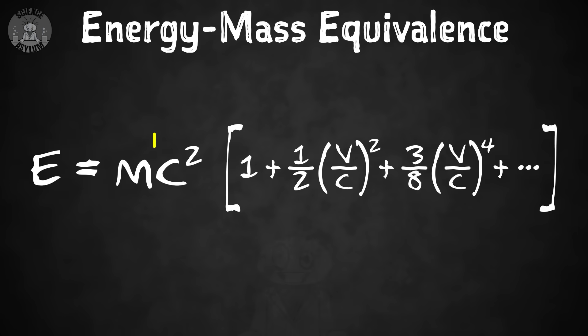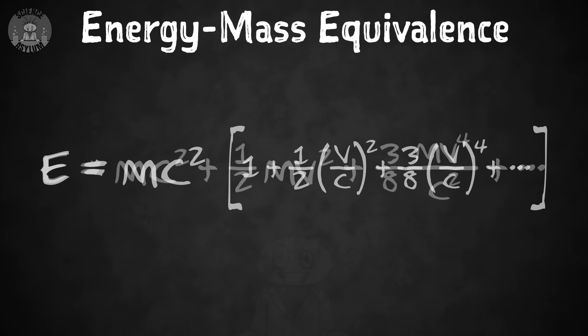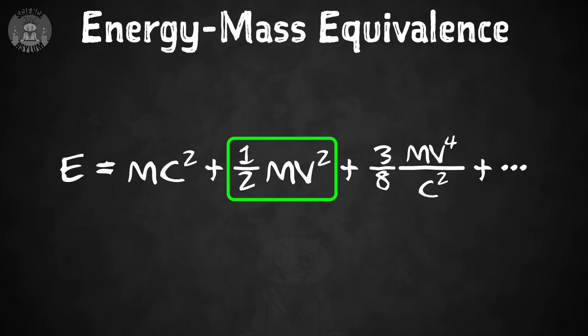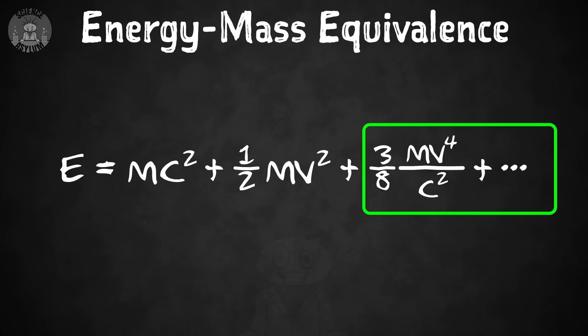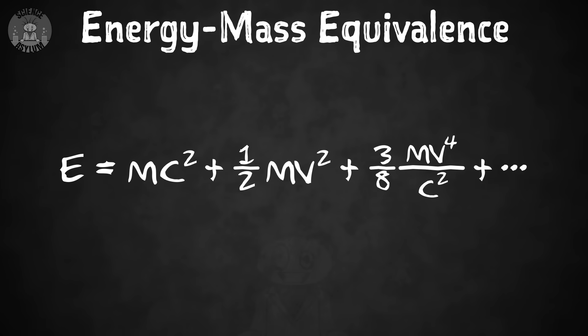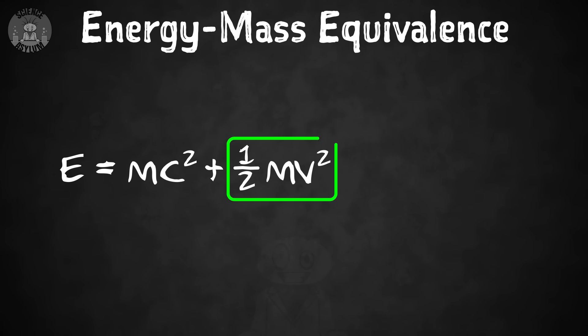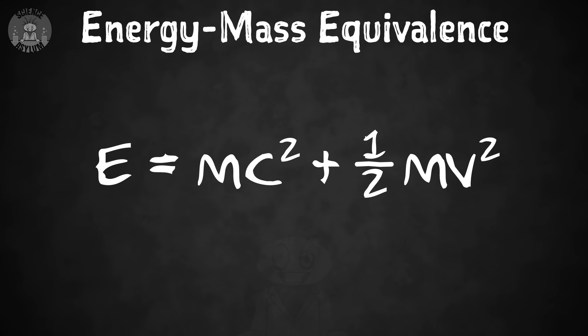It might seem silly to turn this into an infinite series of terms, but sometimes we need to make things more complicated before we can make them simple — math is no exception. With this expanded, we can distribute the other terms and notice something familiar: the equation for kinetic energy, which has been around for a few centuries. The extra terms are just relativistic correction terms — we only need them if we're moving close to the speed of light. If not, those terms are tiny compared to the main term, and we're left with the kinetic energy Einstein already knew about.